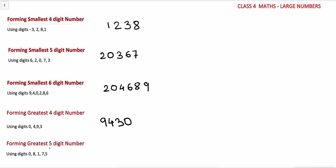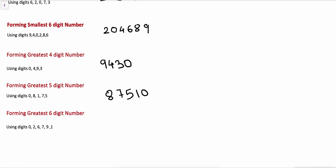Forming the greatest 5-digit number using digits 0, 8, 1, 7, 5 — write all digits in descending order: 8, 7, 5, 1, 0. So the greatest 5-digit number formed by using these digits is 87510.